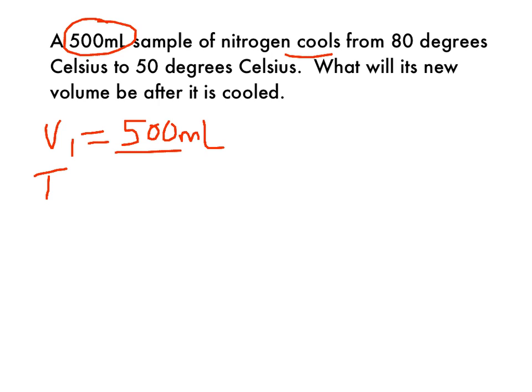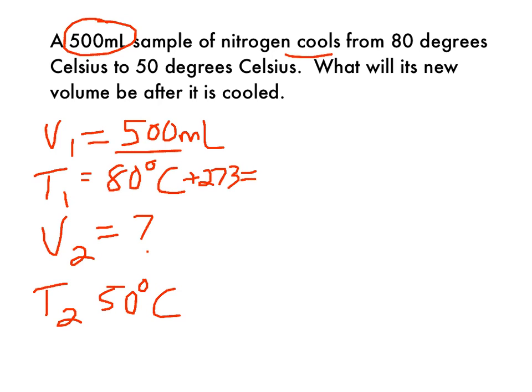So next, our T1 is going to be 80 degrees C. Our V2 is unknown, so I'll put a question mark. And our T2 is 50 degrees C. Now, remember, when we're converting to Kelvin, all we have to do when going from Celsius to Kelvin is add 273. So we're going to add 273 to that. And that ends up giving us 353K. And then this one, we're going to also add 273, and that gives us 323K. And those are the numbers we're going to plug in.